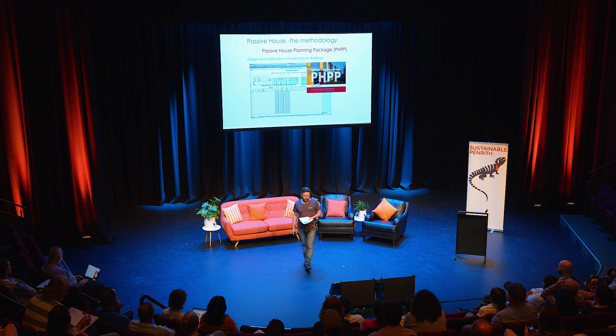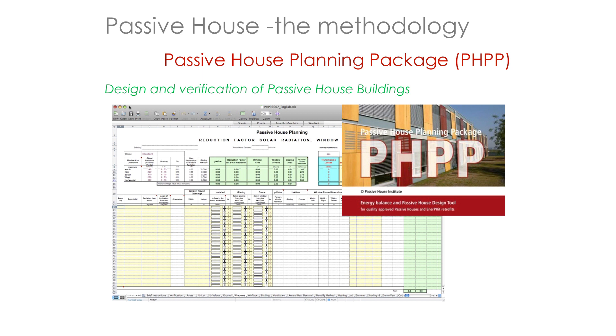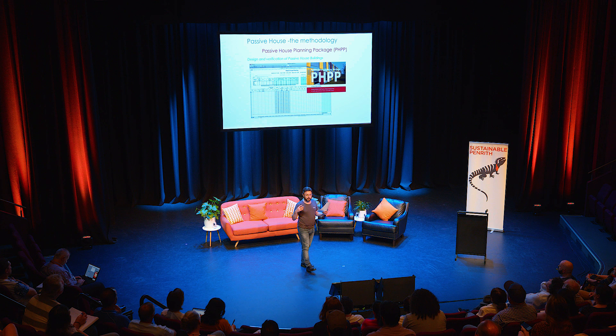So how do we do it? Step one is the Passive House Planning Package, or PHPP. It's basically a really complicated Excel spreadsheet. In it we input all the information — the design, the site details, things like shading, other buildings et cetera, climate data, not only temperature but things like solar radiation, the materials we might use, and the type of construction we might use.